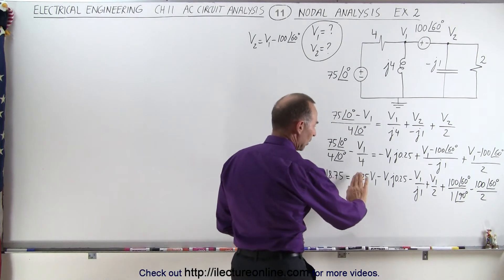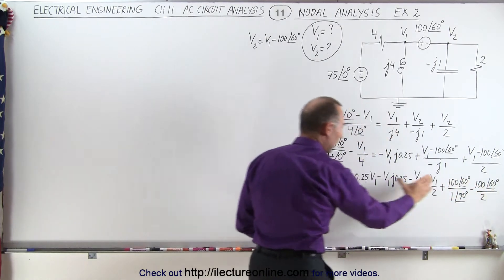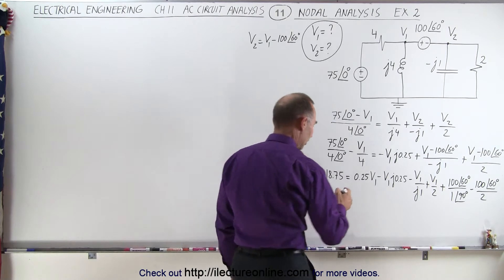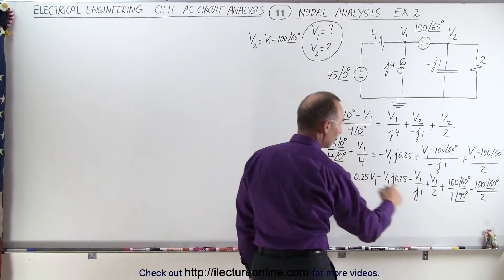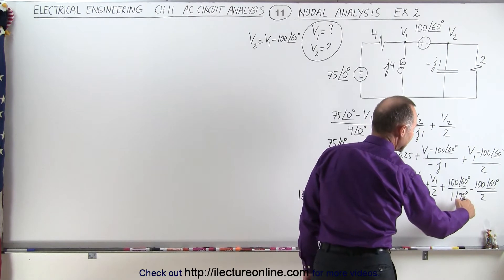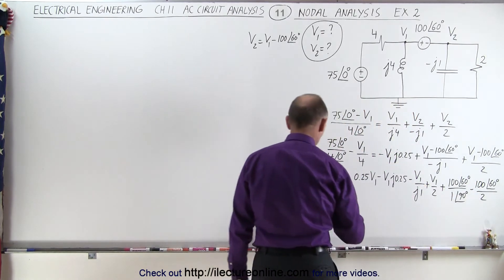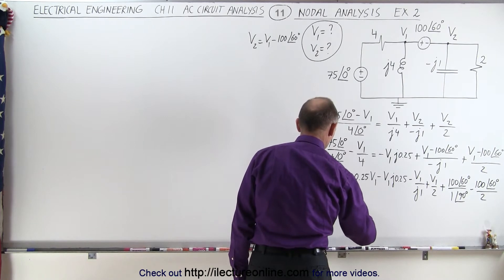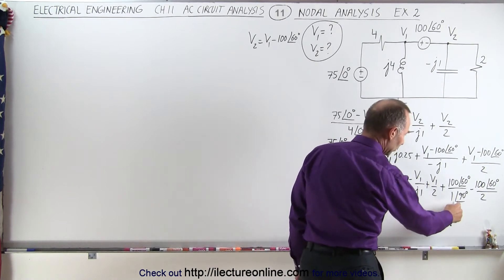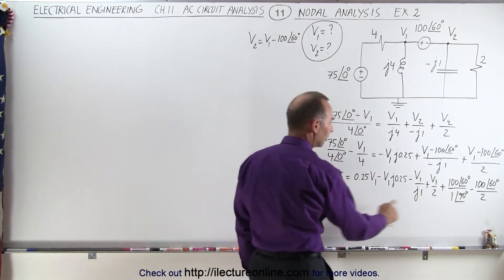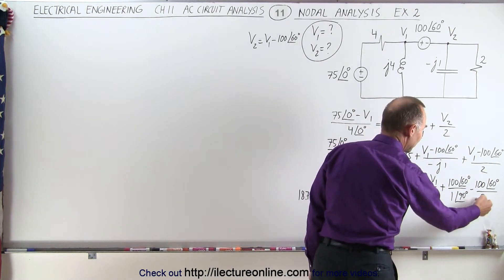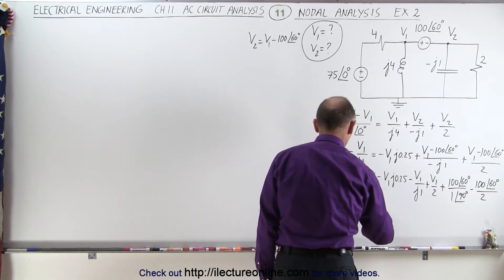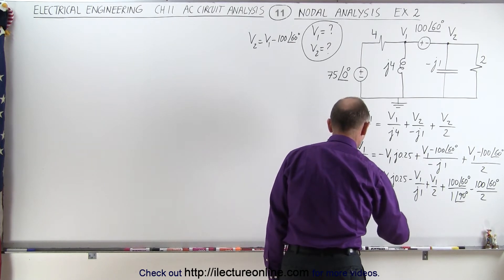Now what we want to do is have all the terms that have a V1 on the right side — we have four of them — and all the terms without a V1 on the left side, so those are just simply numbers. So we have 18.75. Bringing the 100∠60°/J1 term to the left side, that's going to become minus 100 with a phase angle of minus 30 degrees. And then bringing the other term over, it becomes minus 100 with a phase angle of minus 30 degrees. And 100 divided by 2 is 50; it's a minus 50, but moved to the other side it becomes plus 50 with a phase angle of 60 degrees.